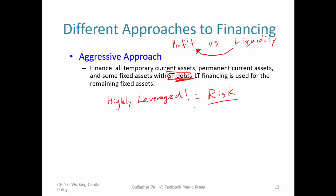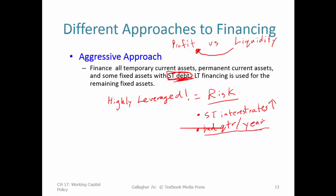Why is it risky to be highly leveraged? Even though short-term debt costs less, interest rates can change — short-term rates can go up, increasing the cost of rolling over short-term debt. Also, if the business has a bad quarter or a bad year, those liabilities are pressing. Without net income, you'd have to liquidate assets or sell off parts of the business. Especially if the downturn is temporary, you'd be giving away part of your business — reducing your net equity — just because you got overburdened with short-term debt. Long-term debt, by contrast, lets you ride out downturns more easily.